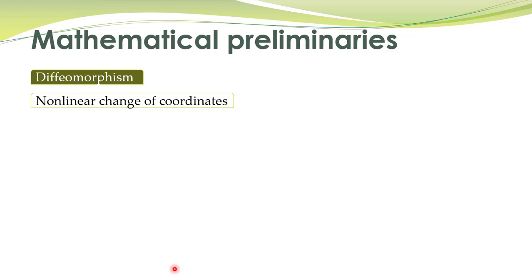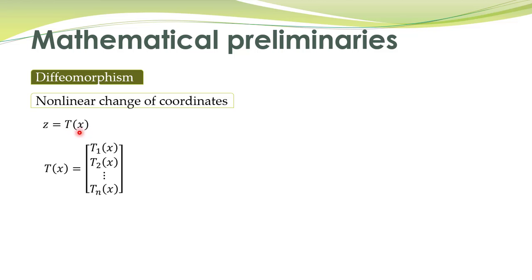For non-linear systems, it would be more appropriate to take a non-linear change of coordinates. For linear systems we had a linear change of coordinates; for non-linear systems we can define a non-linear change of coordinates. That is, the new state variable is related to the actual state variable by a non-linear function. Here, T is not a matrix — it is a vector function of state variables, with n elements, each being a function of the state variables.